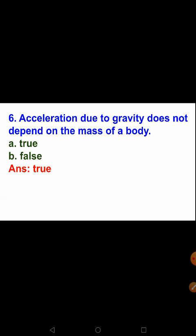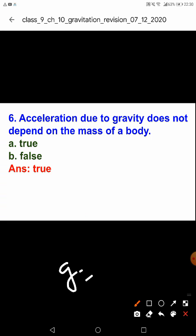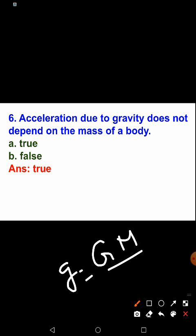Next: acceleration due to gravity does not depend on the mass of a body. Yes, we discussed this during the lesson. The formula is g = GM/r², where M is the mass of the earth, not the falling body. So the value of small g does not depend on the mass of the falling body.